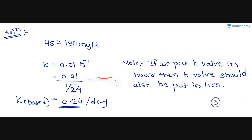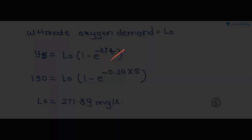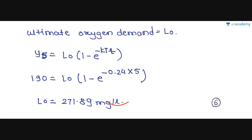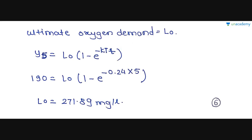If we use K in hours, then the time T in the formula must also be in hours — but since we have converted K to per day, we use T in days. Using the formula Y_T = L₀ × (1 − e^(−K×t)) with Y₅ = 190 mg per liter, K = 0.24 per day, and t = 5 days, we solve for L₀. Putting all values in, L₀ = 271.89 mg per liter. So the correct answer is Option C: 271 mg per liter.